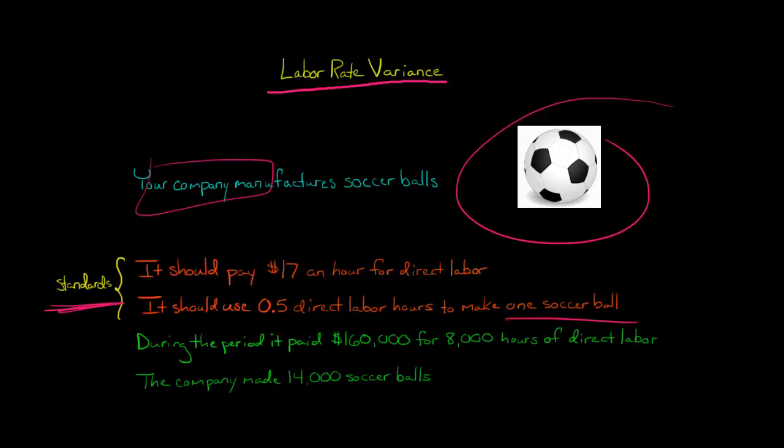So every time you make a soccer ball, it should take 30 minutes of direct labor. Now, during the period, in terms of what actually happens, the company paid $160,000 for 8,000 hours of direct labor. So that's what actually happened, and then the company produced 14,000 soccer balls from that.